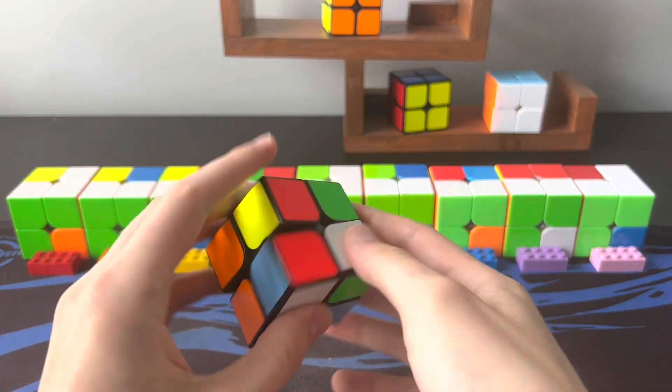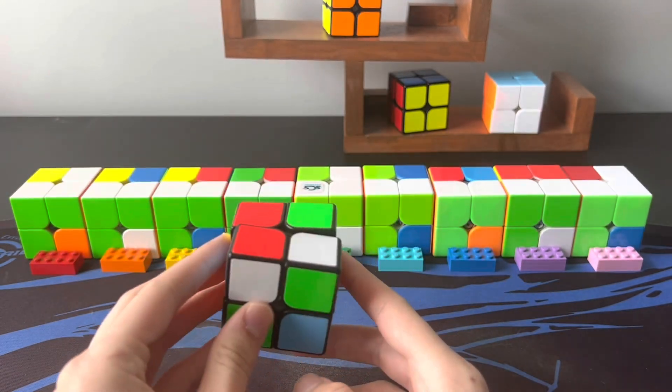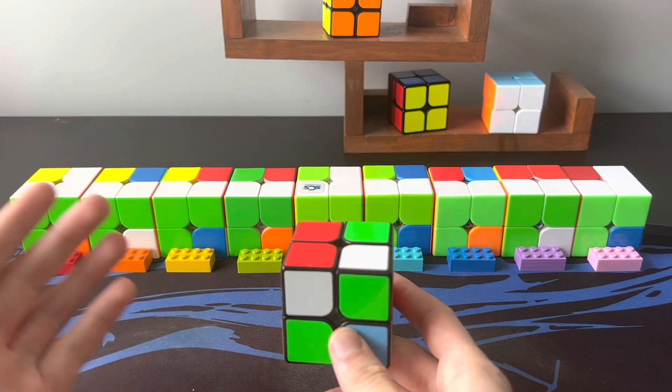And then lastly, if it's facing to the left like this, that's going to be one of these subsets 7, 8, or 9.